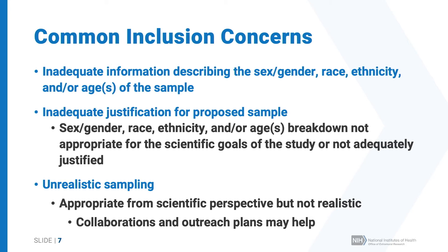Finally, you may have proposed a sample that may be scientifically appropriate but is unrealistic. For example, you may be working in an area with a very low percentage of African Americans and propose a study to find 200 African Americans with a rare condition like schizophrenia. You would need to include a plan explaining how you expect to find that group. In some cases, collaboration and outreach plans may help you partner with others who can help recruit the populations needed for your study.